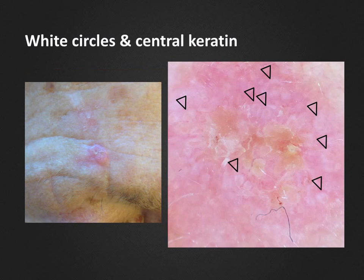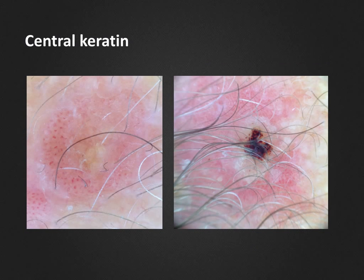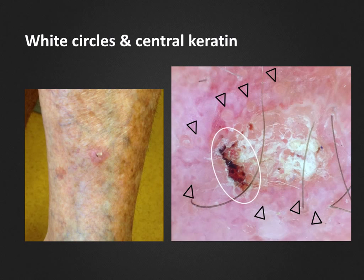White circles, as pointed out here with arrowheads, are very commonly seen in squamous cell carcinomas in combination with central keratin masses. This keratin may be both white and yellow in color. Here we have two cases of hyperkeratotic Bowen's disease transforming into microinvasive squamous cell carcinomas. They have central keratin masses surrounded by clusters of typical glomerular vessels. Another common dermoscopic criterion seen within the keratin masses are the reddish-black blood spots. Again, another case of SCC on the leg of an elderly woman, presenting with white circles and a whitish-yellow central keratin mass with the typical blood spots which have been highlighted.